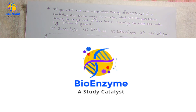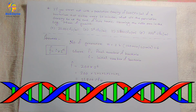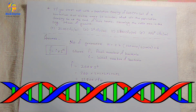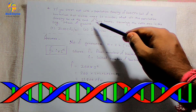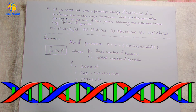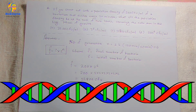We find the number of generations using the same formula: total time divided by time for one division. Total time is 120 minutes (two hours) and time for one division is 20 minutes, so the number of generations n equals 6.